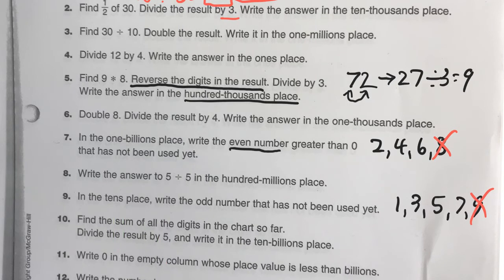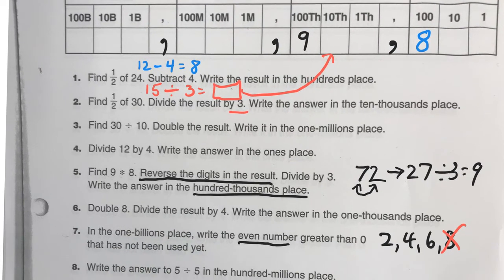At the end of this video, I'm going to put another tutorial covering this whole thing. If you're really confused, you can watch. Maybe I'll have a student make it because I have a feeling some people are going to struggle with this. But that's okay. Write 0 in the empty column whose place value is less than billions. So, at this point, if you filled all of these in, you're going to have an empty column somewhere less than billions. And whatever is empty there, will have a 0 in it.